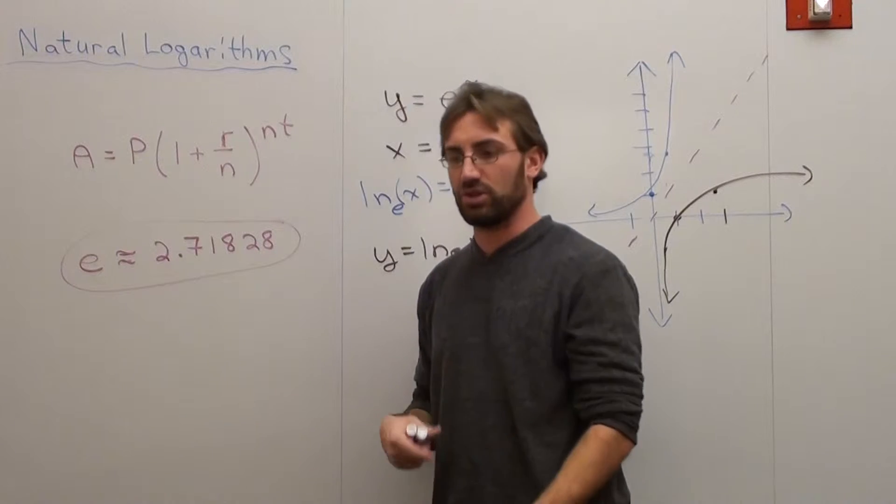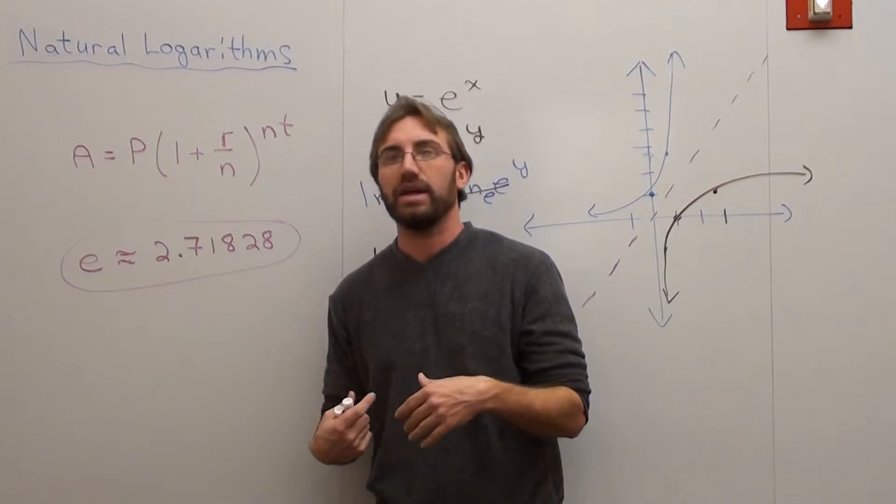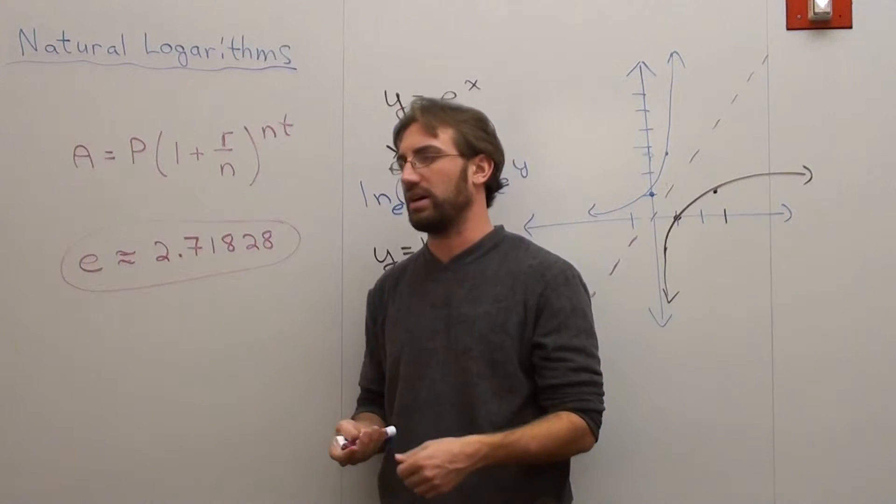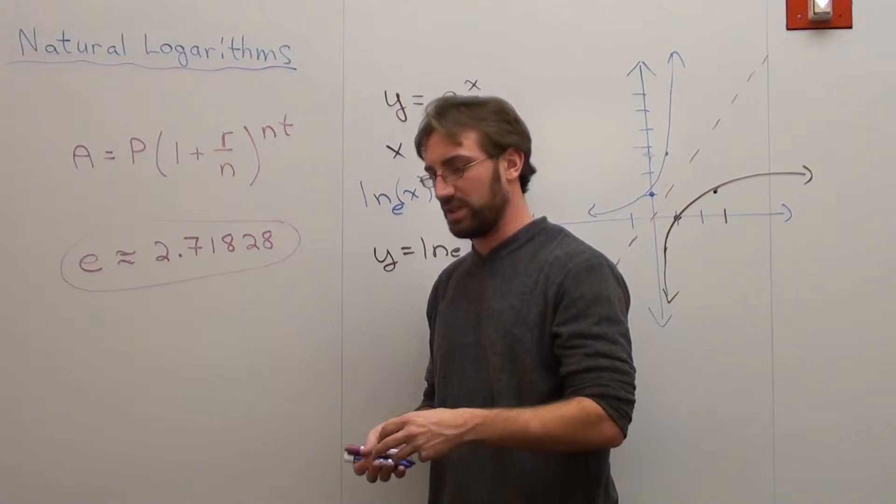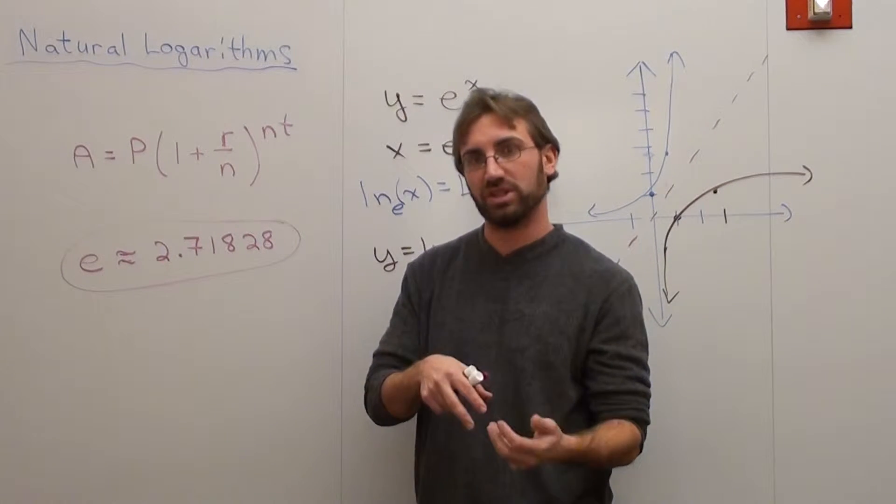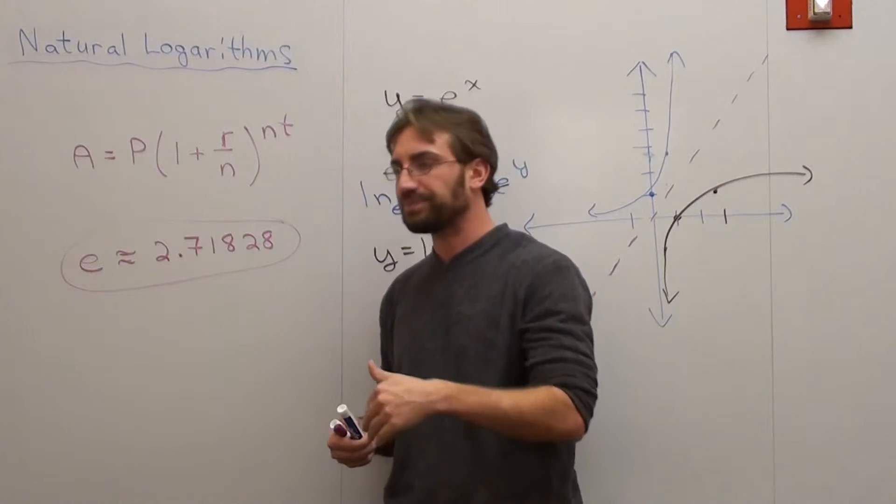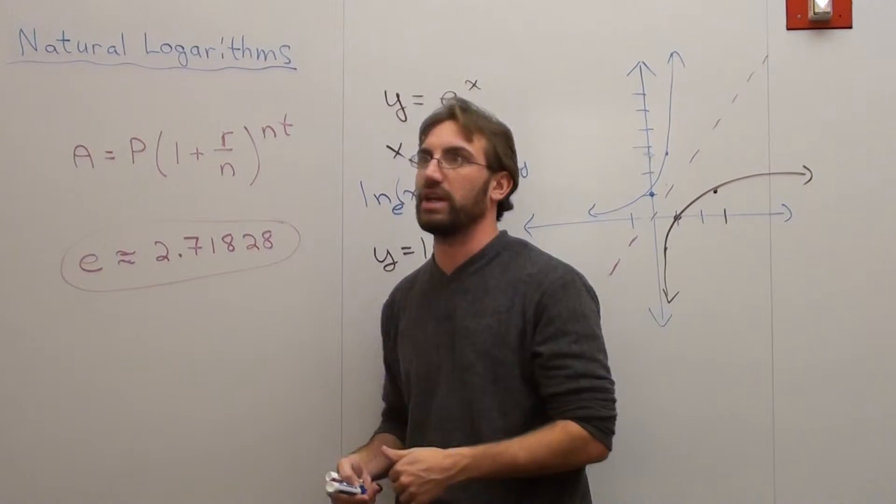And you invest it at 100% for a year. If you compound it yearly, which means you wait between interest periods for one year, you're going to get $2 back. Now if you compound it more frequently than one year, which means interest payments come off faster, what happens is the interest accumulates with the principal and you get slightly more. So if you compound it once a year, you get $2. And if you compound it twice a year, you get more than $2.